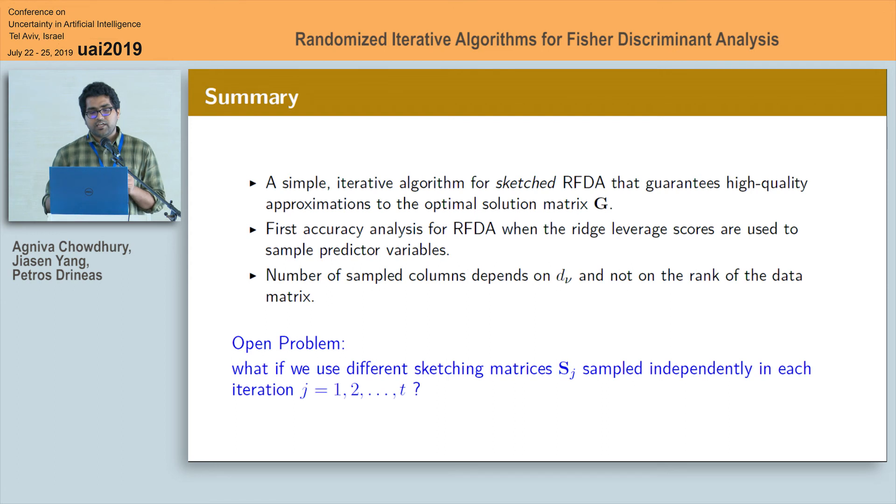Next to summarize our finding we basically presented a simple iterative sketching based framework for regularized Fisher discriminant analysis which guarantees high quality approximation with respect to the optimal projection and ours is the first analysis where ridge leverage scores were used to sample the columns of the data matrix and we showed that the sample size depends on the effective degrees of freedom of the problem and not on the rank of the matrix.